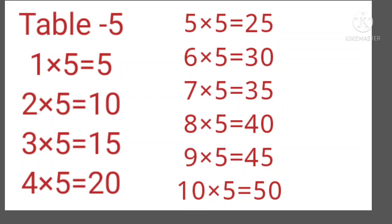6 5's are 30, 7 5's are 35, 8 5's are 40, 9 5's are 45, 10 5's are 50. 5, 10, 15, 20, 25, that's the sequence.